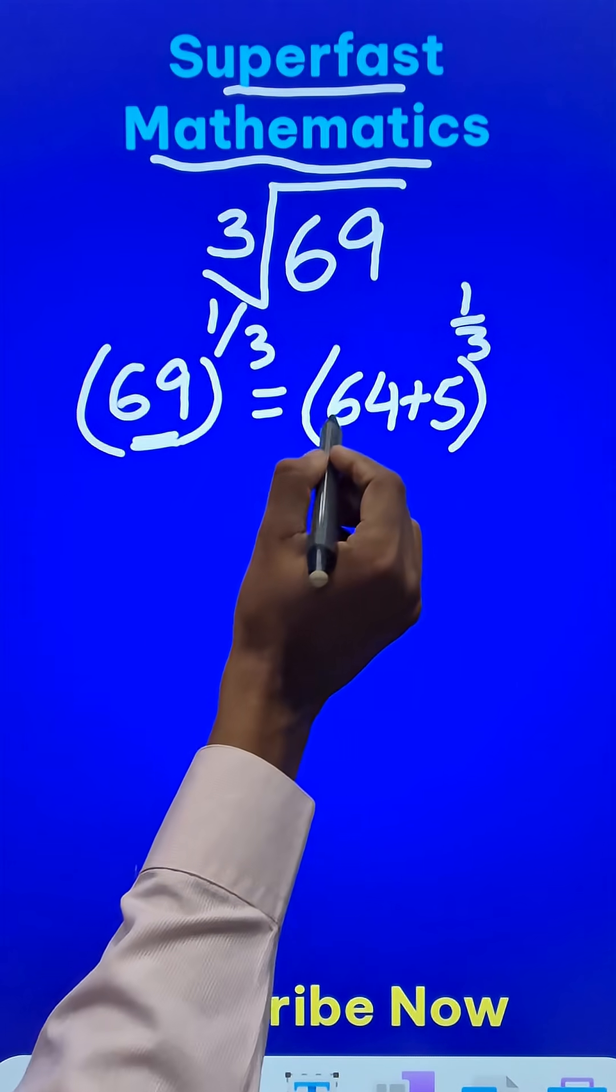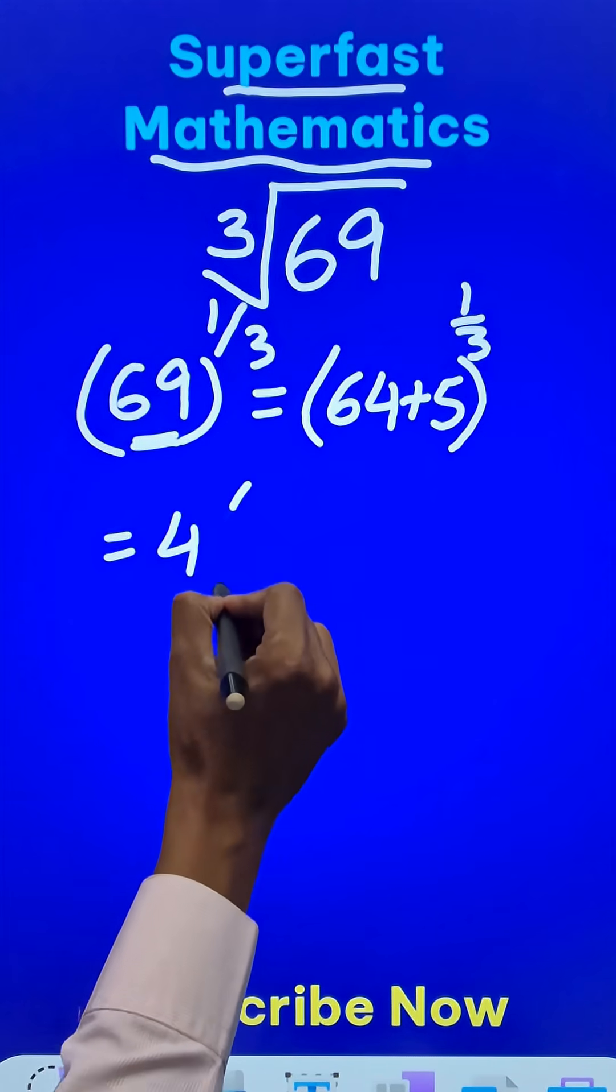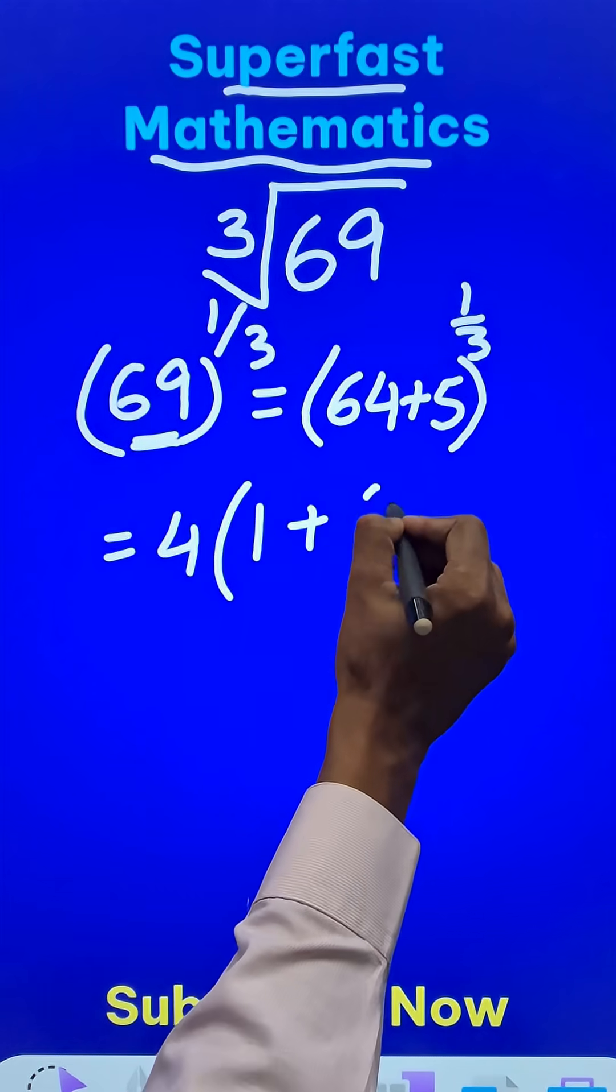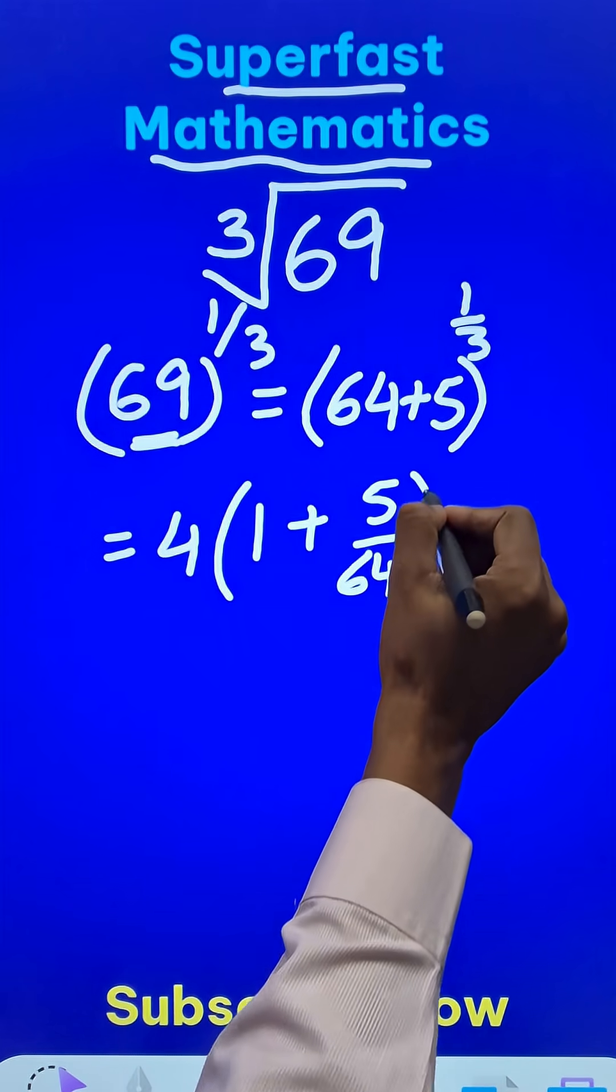Now if I take out this 64, 64 power 1 by 3 will become 4 and within the bracket 1 plus 5 upon 64 raised to power 1 by 3.